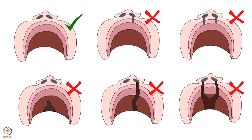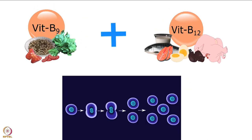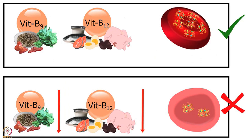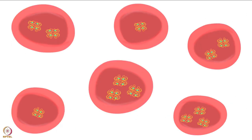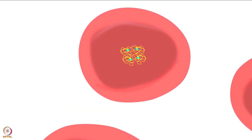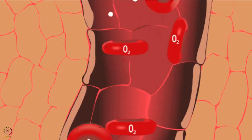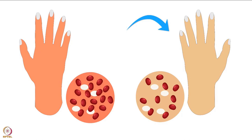A cleft occurs when tissues do not fuse together during growth in the womb. Folate or vitamin B12 deficiency results in macrocytic anemia. Both nutrients are required for normal cell growth and division. In their deficiency, red blood cells do not mature or divide properly. As a result, large immature red blood cells are formed, few in number with very low hemoglobin, and unable to function properly. Low hemoglobin levels cause anemia as hemoglobin transports oxygen to tissues and cells.